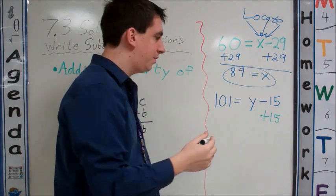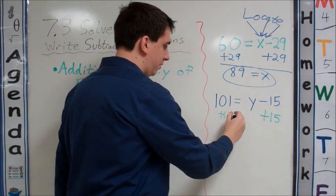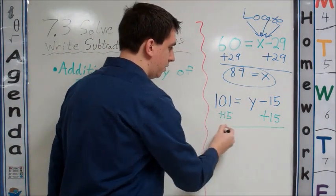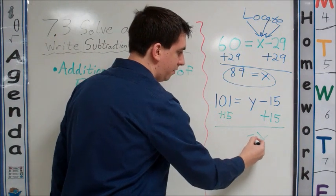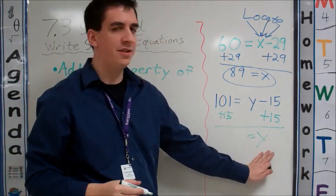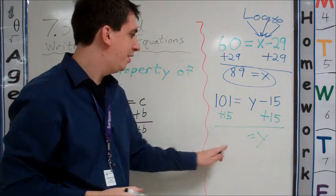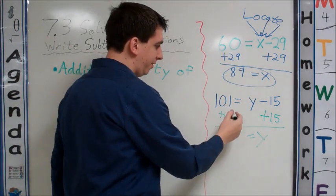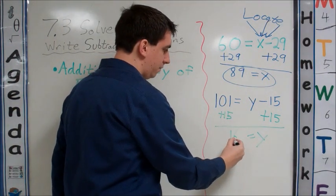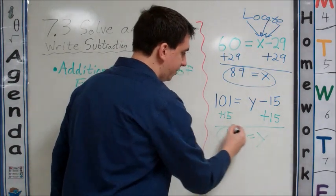And remember, we have to do it to both sides of the equation. So we'll have Y, our variable, left by itself. It's isolated now on the right side. And on the left side, we have 101 plus 15, which will give us 116 equals Y.